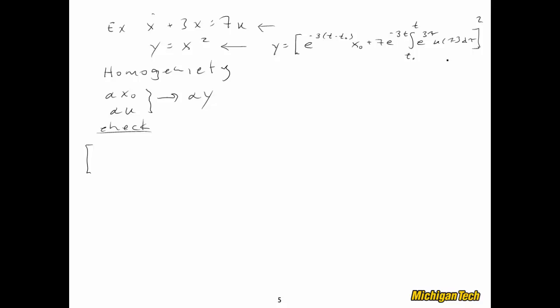So I'm just going to replace every occurrence of x zero with alpha x zero, every occurrence of u of tau with alpha u tau, and then compare it to alpha times that solution. And there we have it.